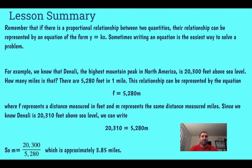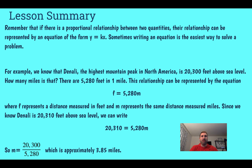However, we saw in the last problem situations where we were talking about B for bottles, or W for weight, or V for value. Just know: one variable is the input, one is the output, and K is always our constant of proportionality.